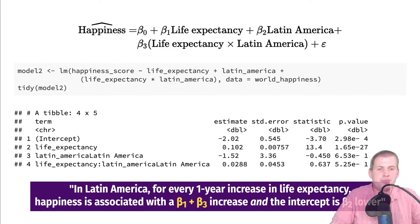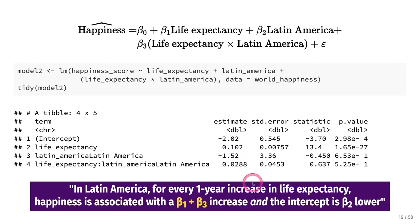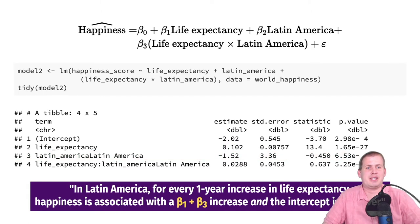The template for interpreting interaction terms: in Latin America, for every one year increase in life expectancy, happiness is associated with a beta1 + beta3 increase — that's 0.1 + 0.03 = 0.13 units. The Latin America intercept now looks negative at -1.5, but that's just a mathematical artifact of where the tilted line would cross the y-axis at life expectancy of zero. You don't need to interpret it as Latin America being sadder on average.